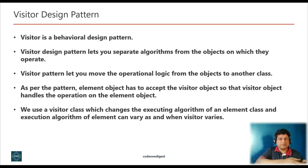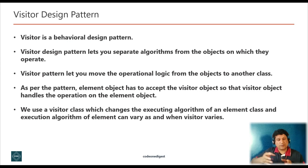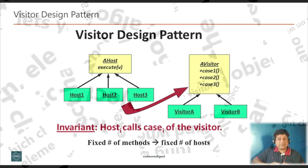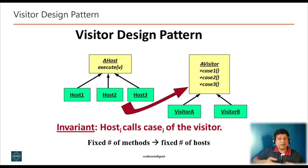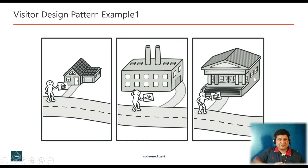With the help of visitor pattern, we can move the operation logic from an object to another class. As per the pattern, the element object has to accept the visitor object so that the visitor object handles the operation on the element object. It is a way of separating the algorithm logic from the element class to another class. The visitor pattern suggests you place new behavior into a separate class called visitors, instead of trying to integrate it into existing classes. The original object is then passed to one of the visitor's methods as an argument, providing the method access to all necessary data within that object.